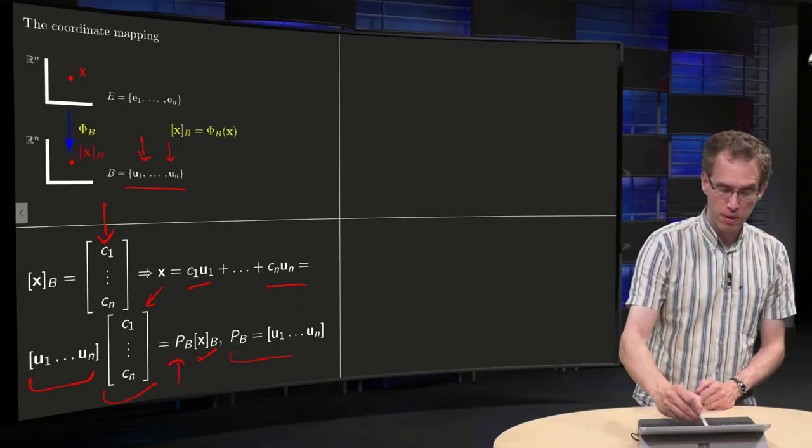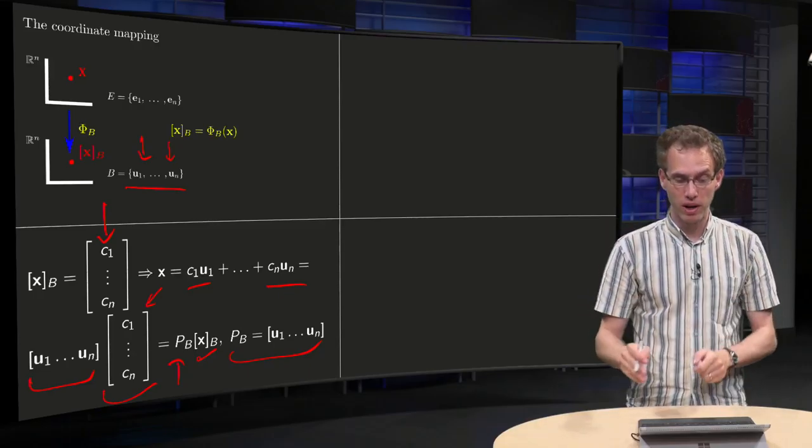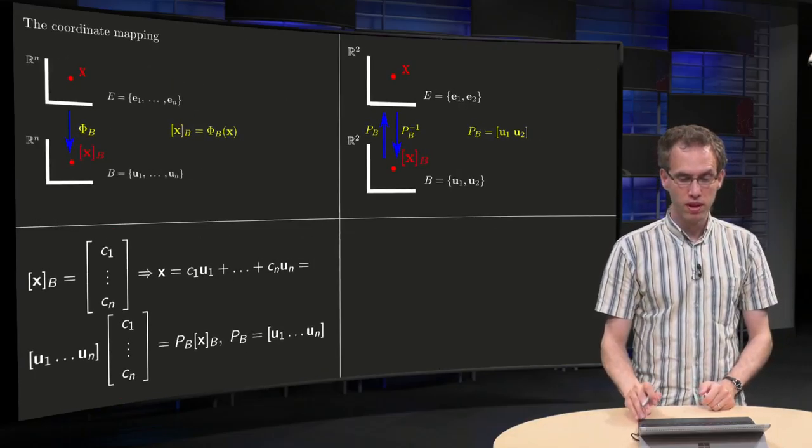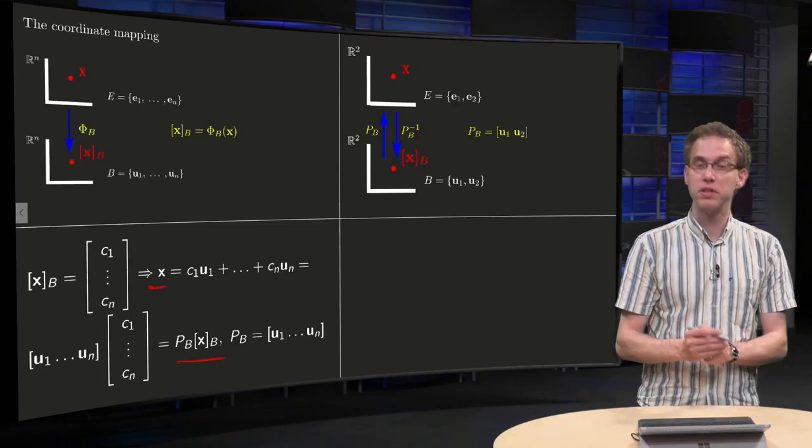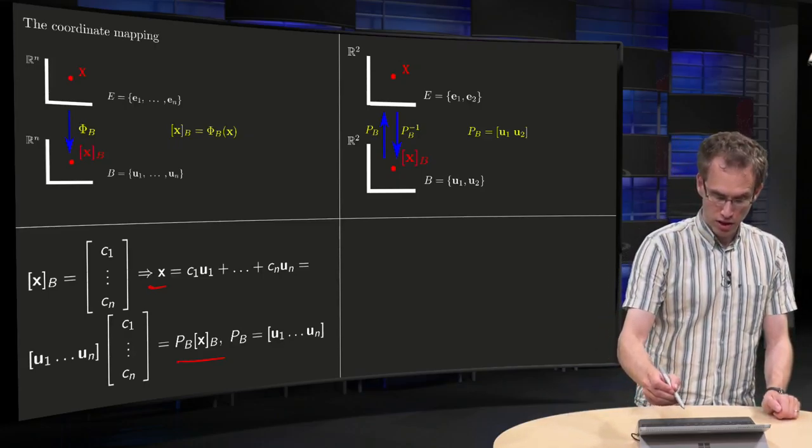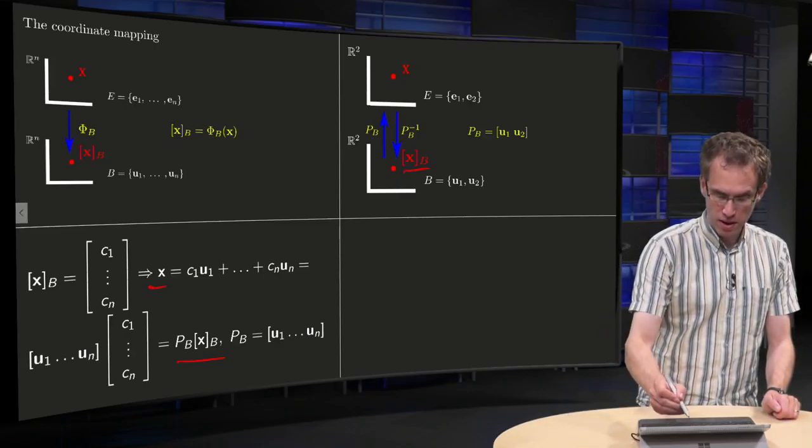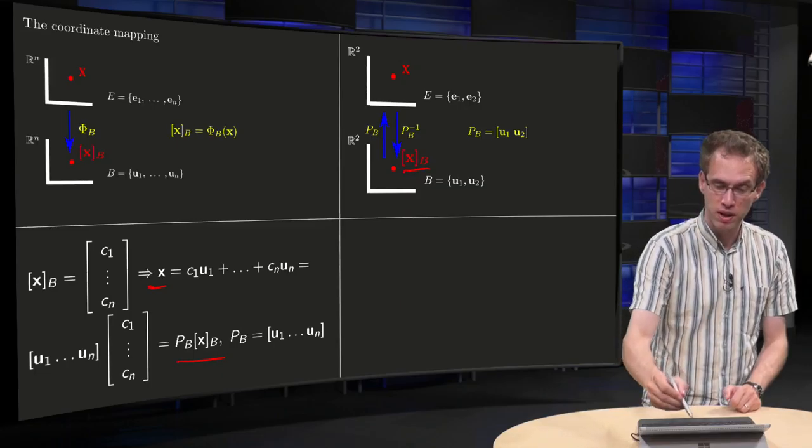We have to set PB as the matrix containing u1 up to un, and then we have x equals PB times xB. So in the picture, if we start with our xB and then we apply PB, so we get PB times xB, we get our x.